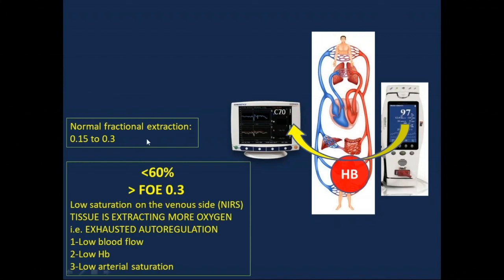And the fractional oxygen extraction, which is this number minus the number on the NIRS divided by the pulse oximetry number, will give you the fractional oxygen extraction, which is typically between 0.15 to 0.3.